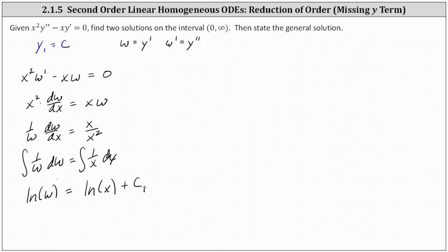And now we need to solve for w. To do this, we'll exponentiate both sides of the equation with the base of e. Simplifying, e to the power of natural log w simplifies to w equals on the right, we have e to the power of natural log x times e to the power of c sub one.